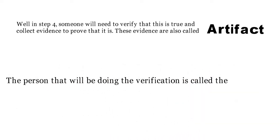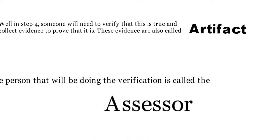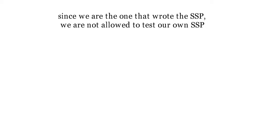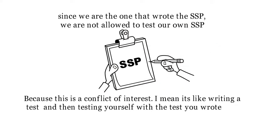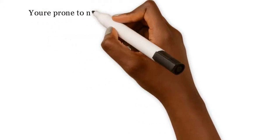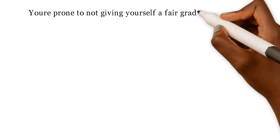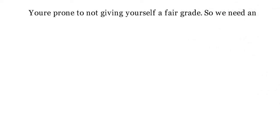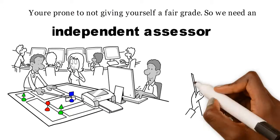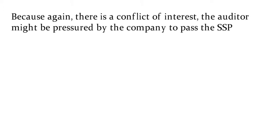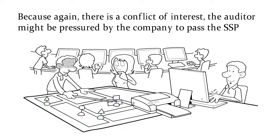The person that will be doing the verification is called the assessor. And guess what? Since we are the ones that wrote the SSP, we're not allowed to test our own SSP. Why? Because this is a conflict of interest. It's like writing a test and then testing yourself with the test that you wrote — you're prone to not give yourself a fair grade. So we need an independent assessor. The independent assessor should not work for the same contract company as the person that wrote the SSP, because again, there's a conflict of interest.